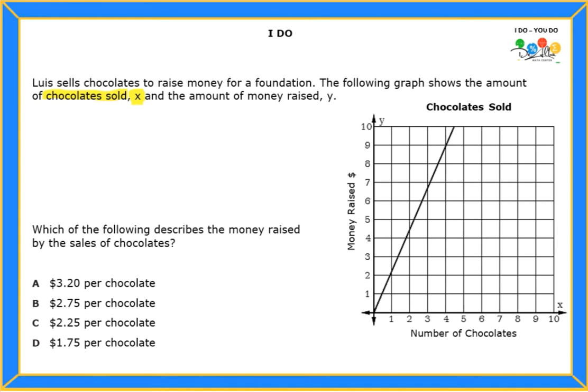And the money that they're raising is Y. Okay, so let me change the color so that we know there's two different things here. This is the money raised. So notice how in the graph we already have those two labels - X is the number of chocolates and Y is the money that they're raising.